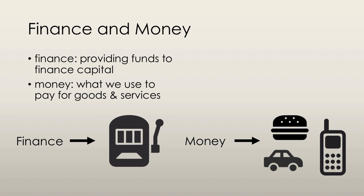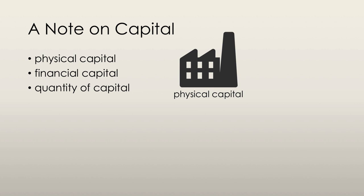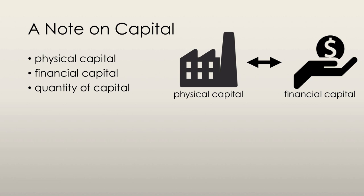Physical capital is the tools, instruments, and machines that have been produced in the past and that are used to produce goods and services in the future. Inventory, raw materials, and semi-finished goods are a part of physical capital. Financial capital are the funds that firms use to buy this physical capital, and the quantity changes because of investment and depreciation.